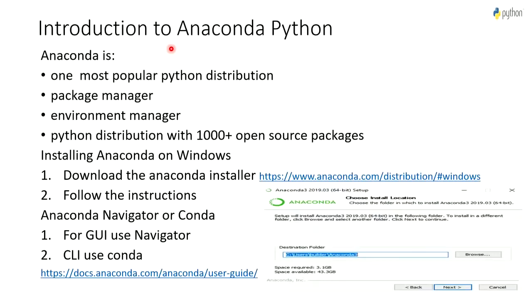Suppose you want to install multiple versions of Python because some software may require Python 2.7 and others may require Python 3.2. That can be done easily with an environment manager. Anaconda manages different versions of Python as an environment manager. Plus, it comes with 1000+ open source packages available by default.